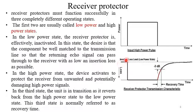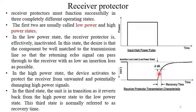So we have three distinct states: the low power state, the high power state, and the recovery time. In the low power state, the receiver protector is effectively inactive, and the component should be well matched to the transmission line so that the returning echo signal passes through with as low an insertion loss as possible. In the high power state, the device activates to protect the receiver. In the third state, the unit transitions back from the high power state to the low power state — this is the recovery time.